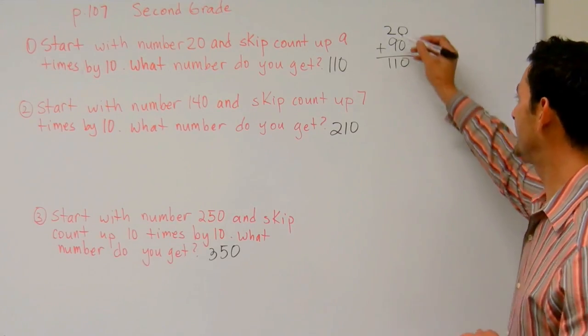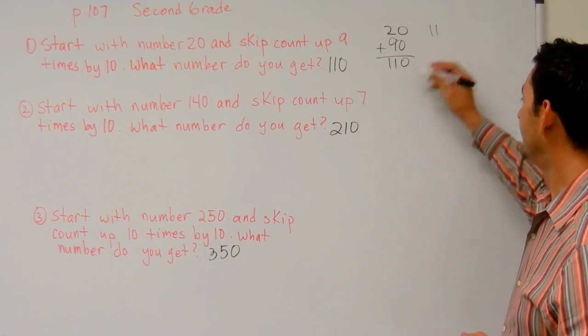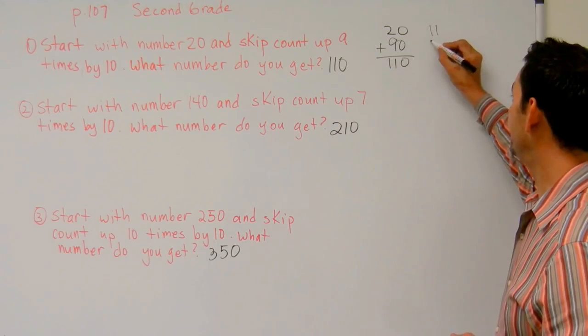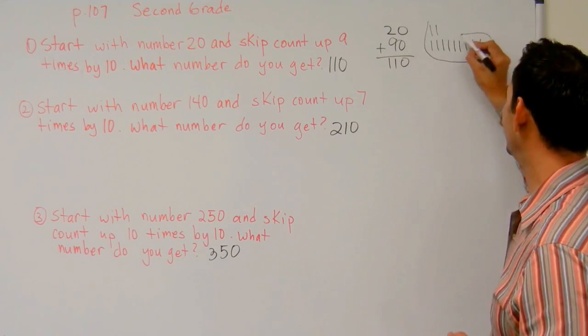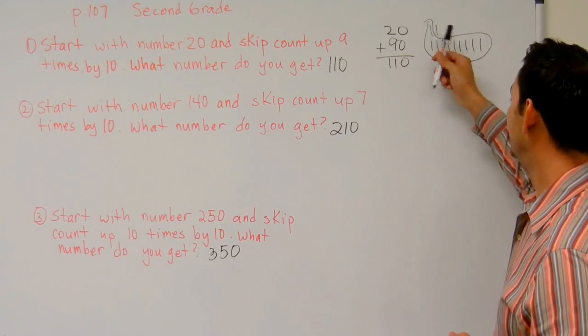The other way we can do it too is here we have two bundles of ten. Here we have a bundle of 90. Okay? We have nine. We can bundle that up. That's 100, 110.